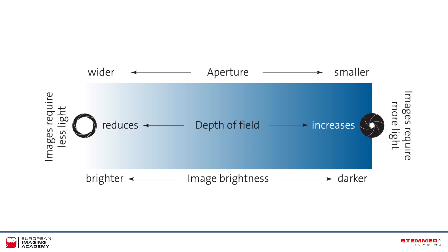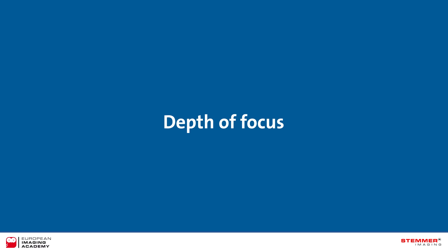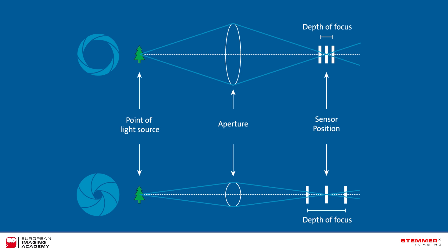This doesn't only affect the potential position of the object — it works behind the lens too. The depth of focus, which is the distance at which the sensor can be positioned, is also affected. The effect is similar to the depth of field, whereby a small aperture gives you a larger depth of focus, and vice versa.